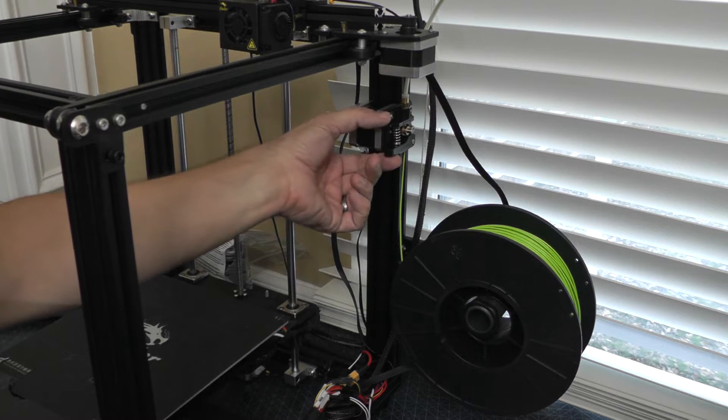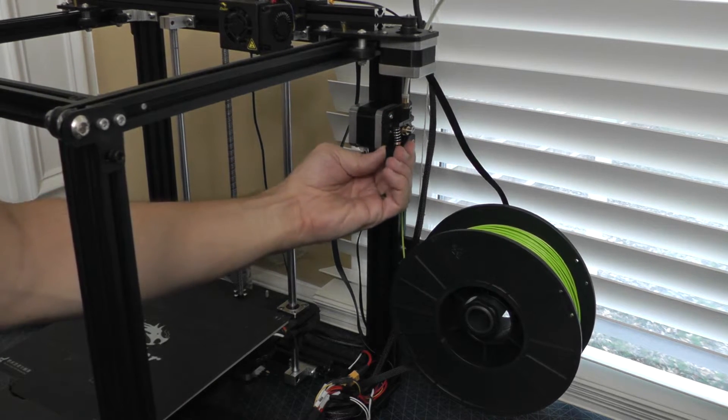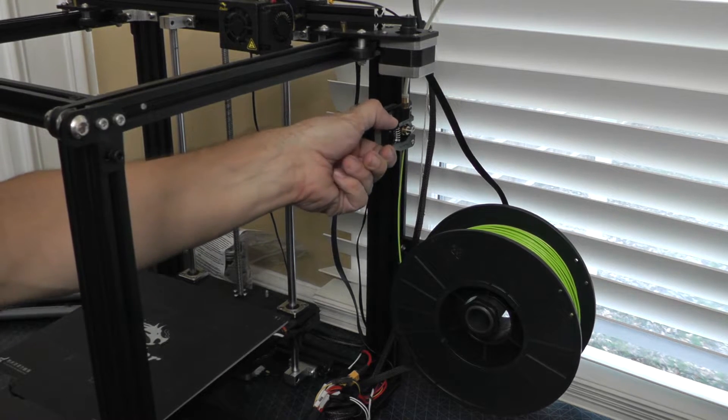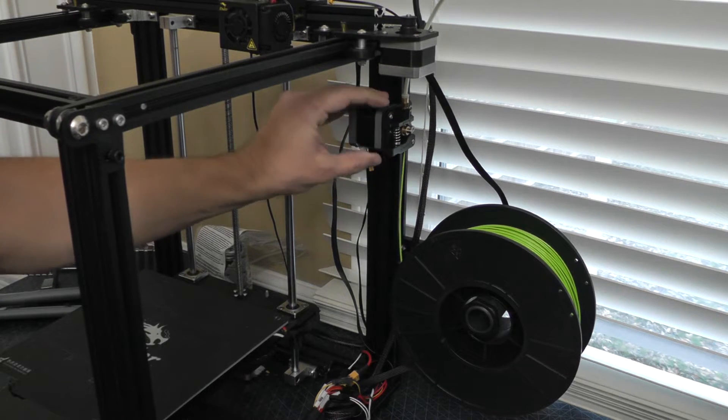So here's the original extruder. Like I mentioned, this is all plastic. It has a fair amount of give to it. It just doesn't feel solid, and every time I have to change the filament out, I feel like it's just a little too loose, and I might even break it.